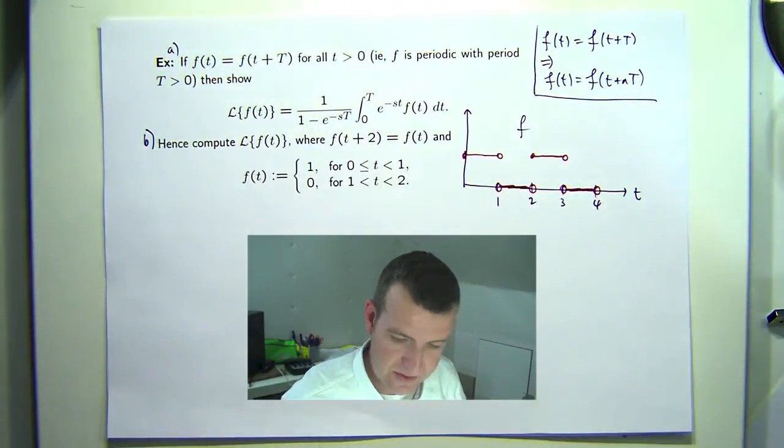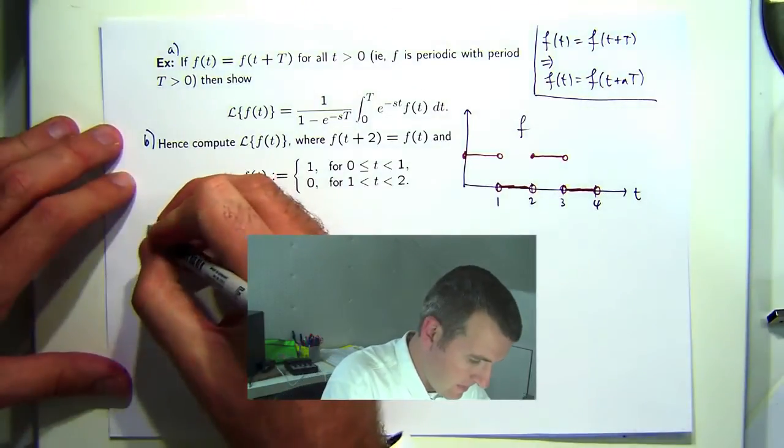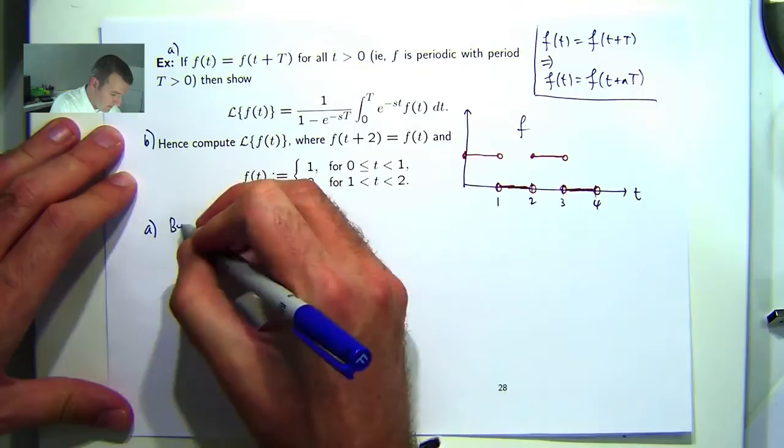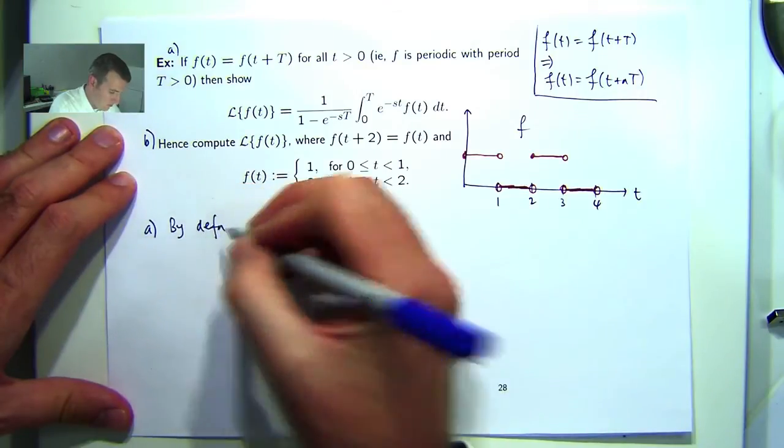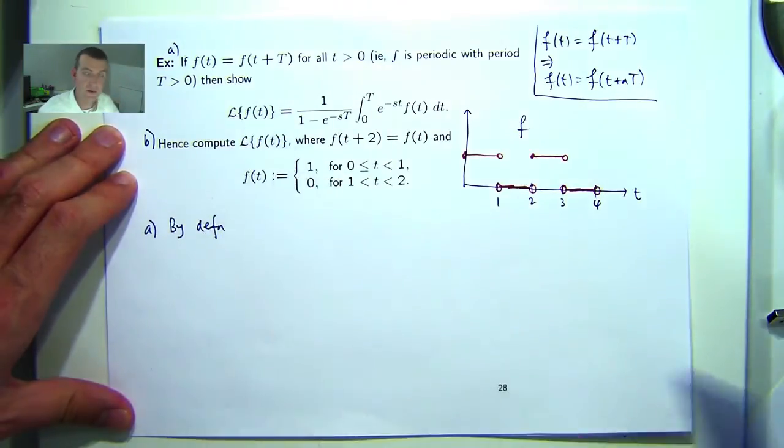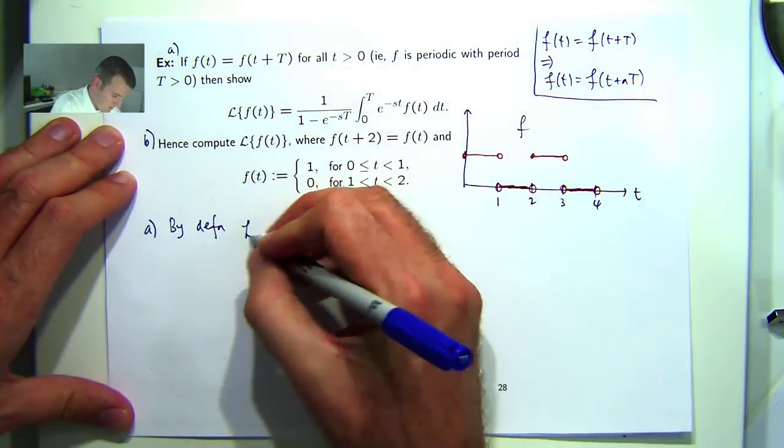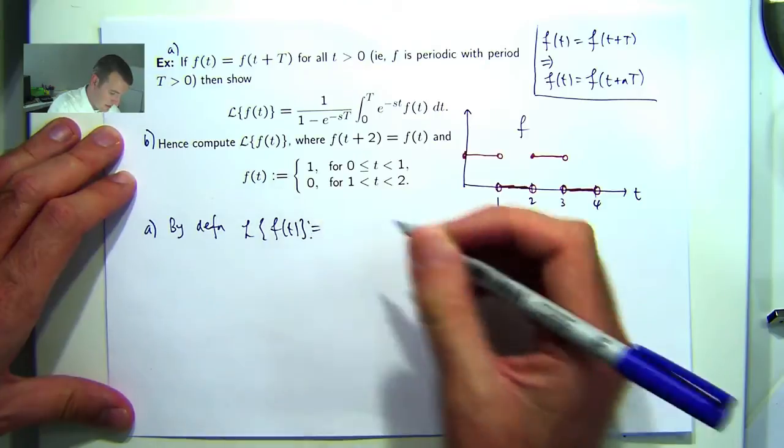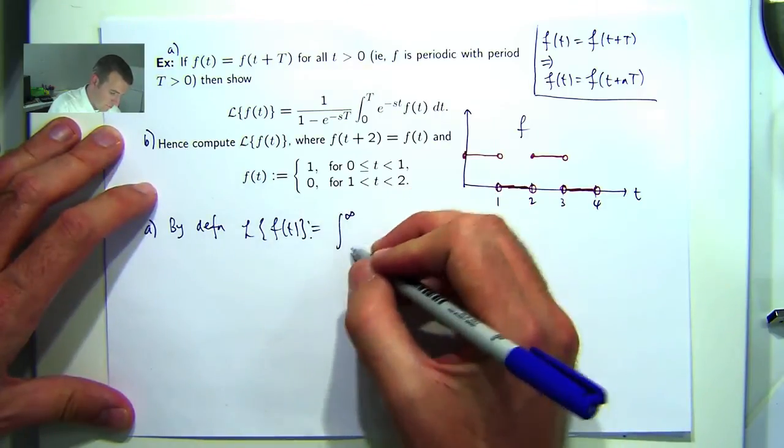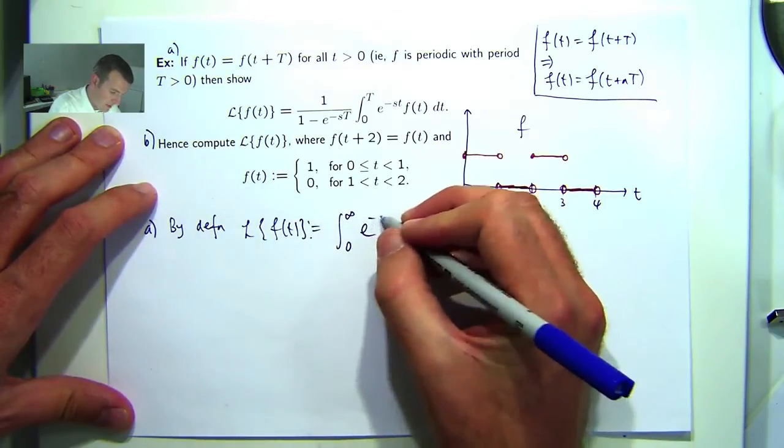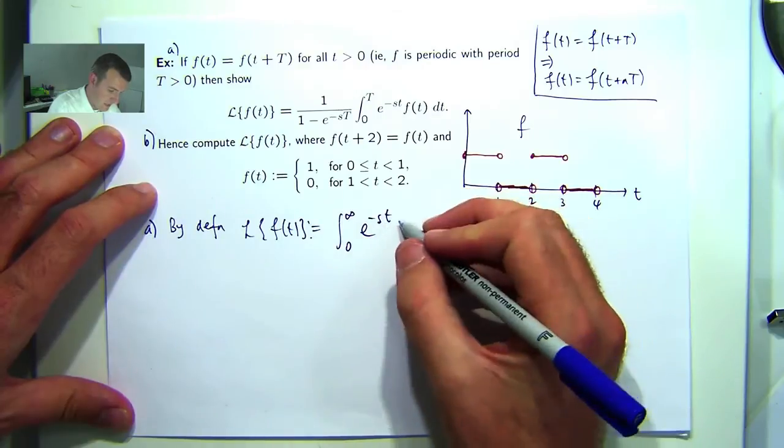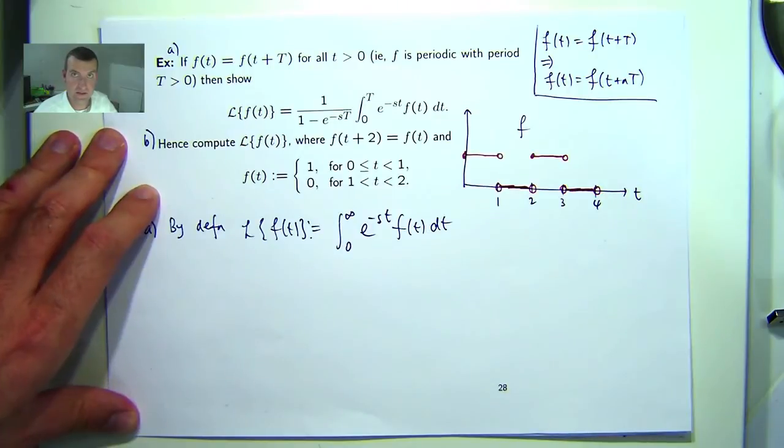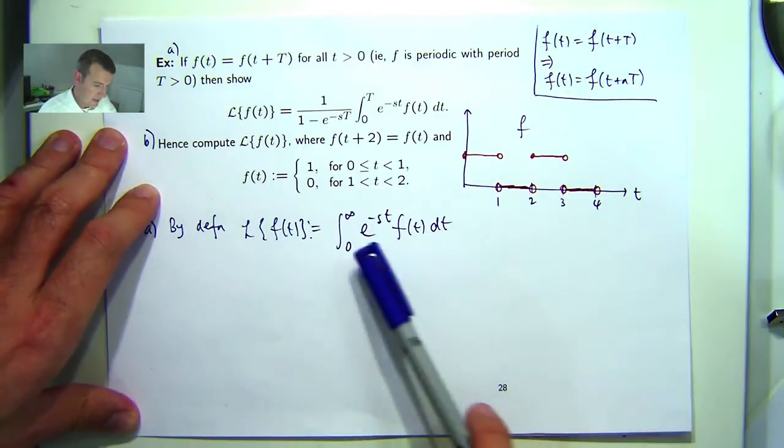By definition, the Laplace transform, which we denote by this curly L, is an integral transform. So basically what you do is you form an improper integral by multiplying the function of t by this exponential e^(-st) and integrating with respect to t from 0 to infinity.